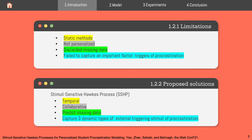Despite its importance in the literature, many existing methods are not ideal. Usually they are static, not personalized, they have to discard missing data, and they fail to capture important factors in procrastination modeling such as the triggers of procrastination.